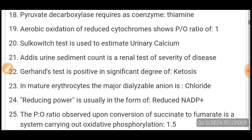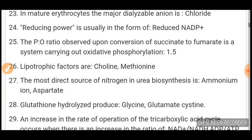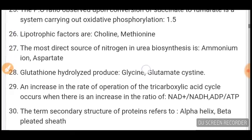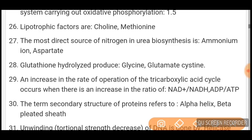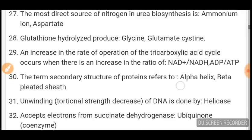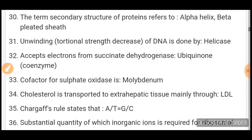Reducing power is usually in the form of reduced NADPH. The P:O ratio observed upon conversion of succinate to fumarate in oxidative phosphorylation is 1.5. Lipotropic factors are choline and methionine. Most direct source of nitrogen in urea biosynthesis is ammonium ion and aspartate. Glutathione hydrolyzed products are glycine, glutamate, and cysteine. Increase in rate of TCA cycle occurs when there is an increase in NAD+/NADH or ADP/ATP ratio. Secondary structure of protein refers to alpha helix and beta-pleated sheets. Unwinding of DNA's torsional strain is done by helicase.